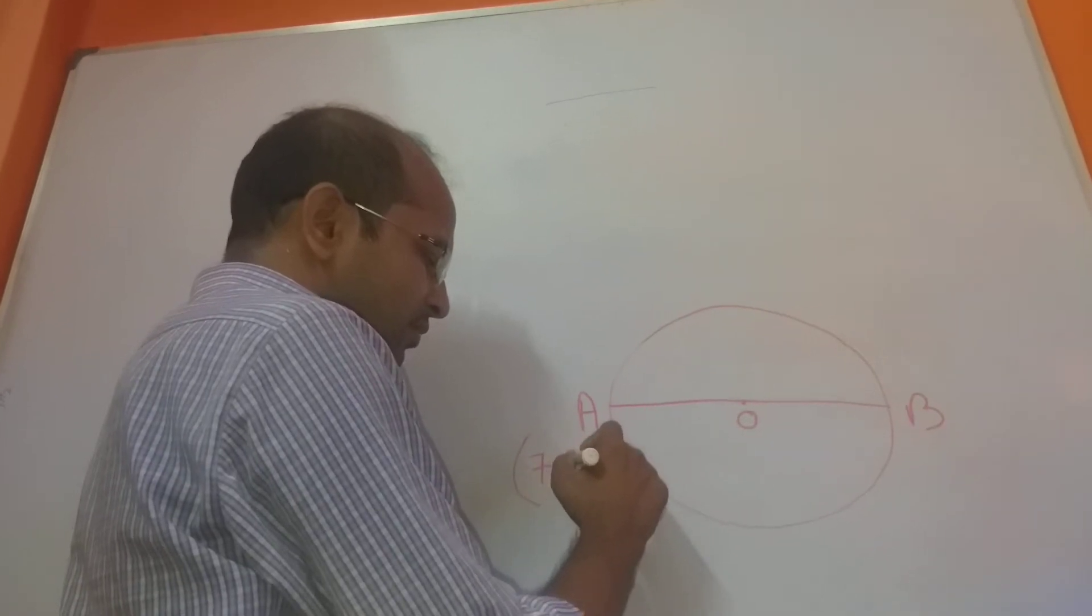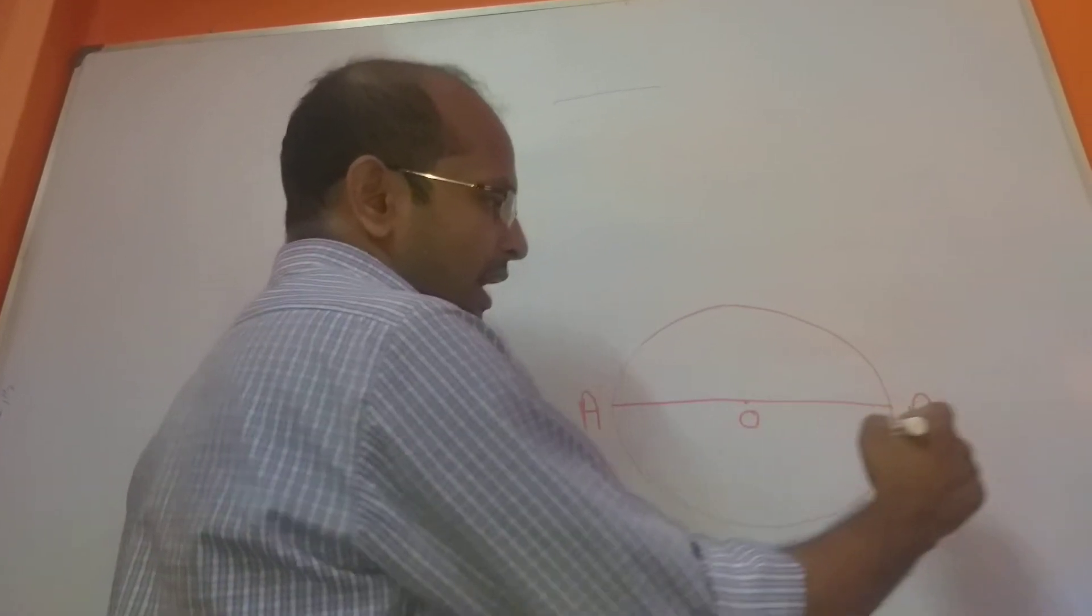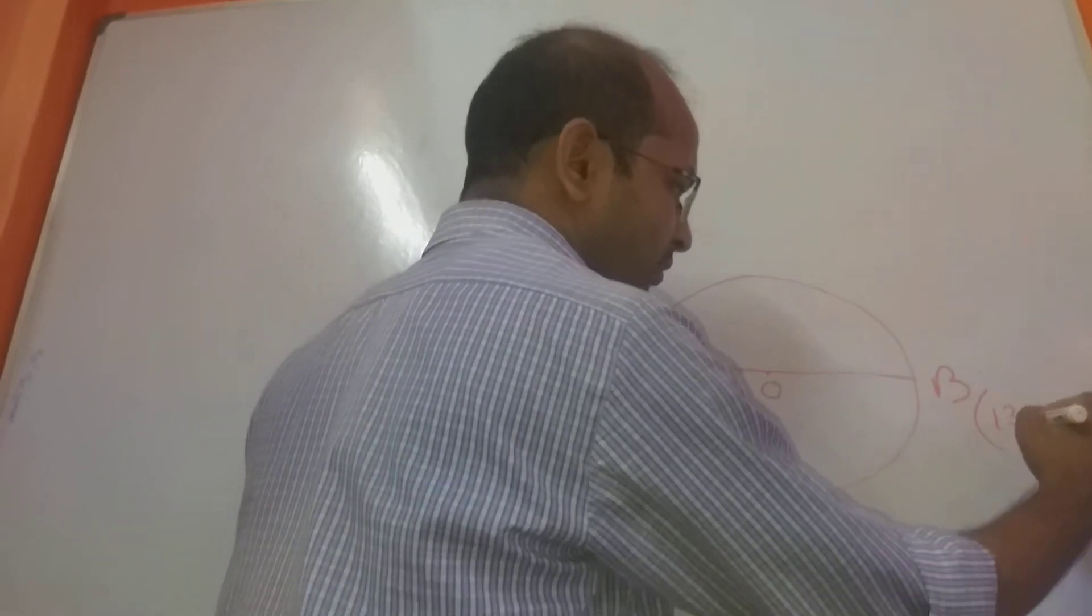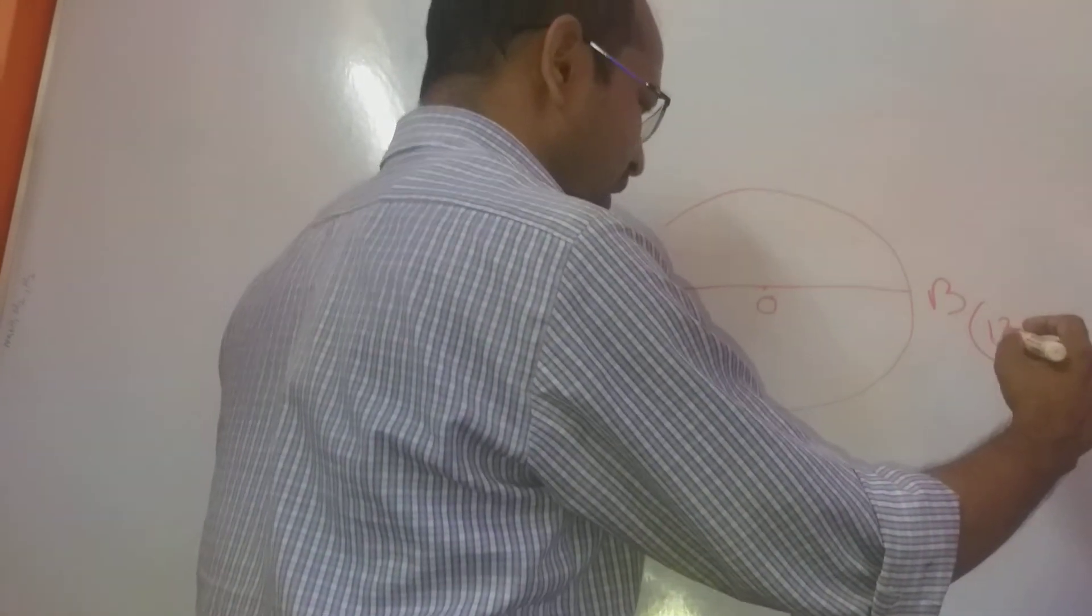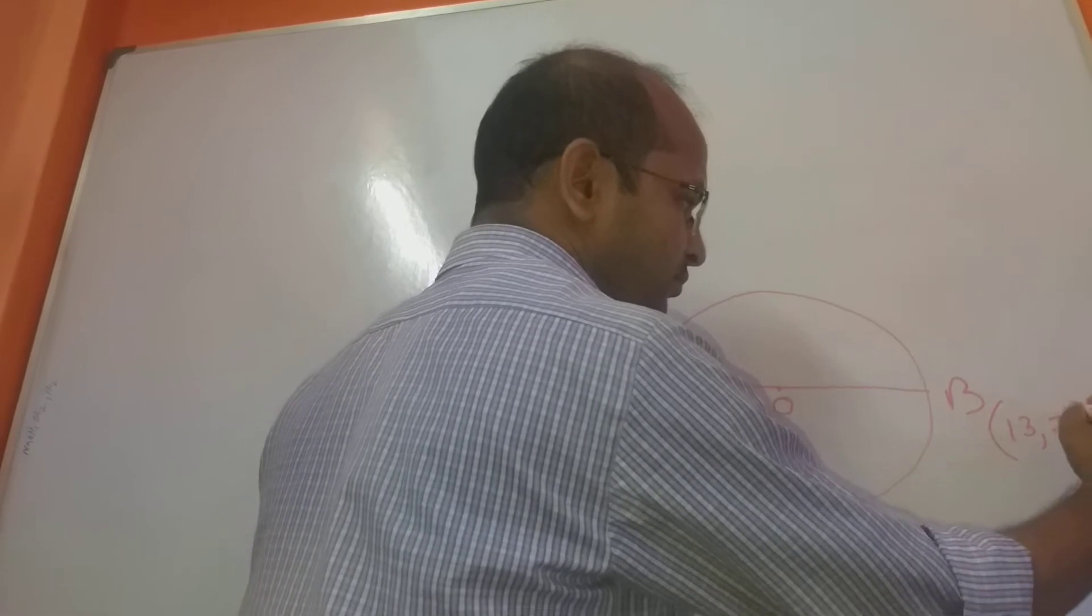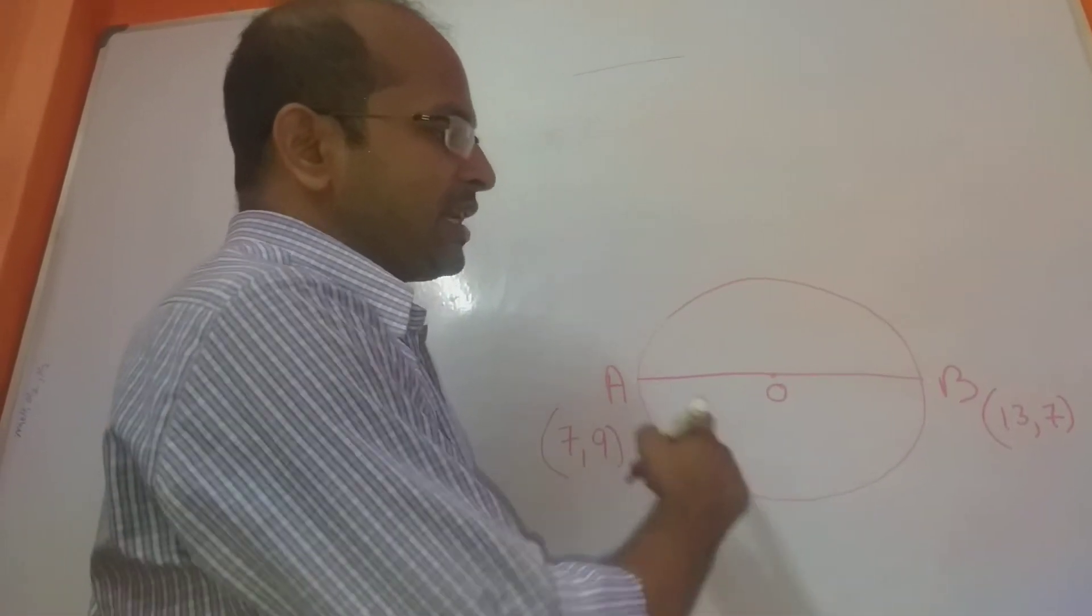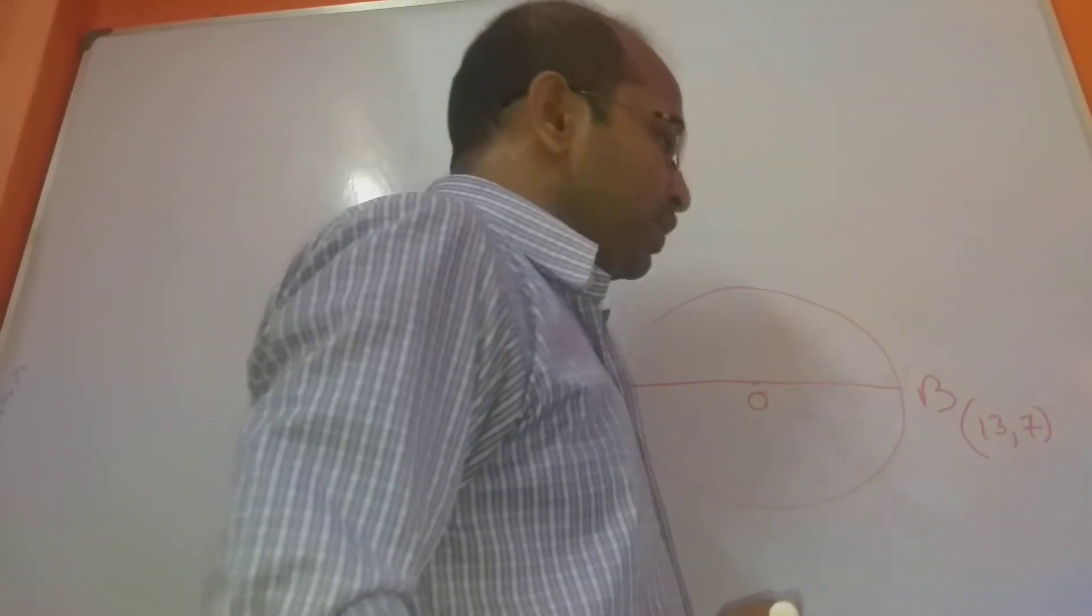Suppose they have given it as 7, 9 and 13, 7. They will ask you to find the center of the circle. This type of question has come in CBSE board also.